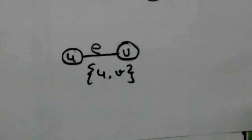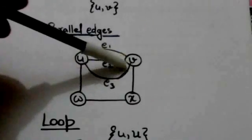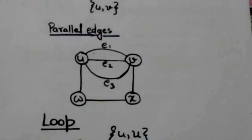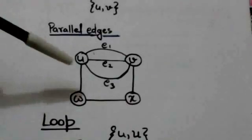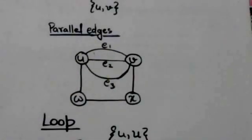Two or more edges that join the same pair of distinct vertices are called parallel edges. For example, in this graph edges E1, E2, and E3 are parallel edges between vertices U and V.